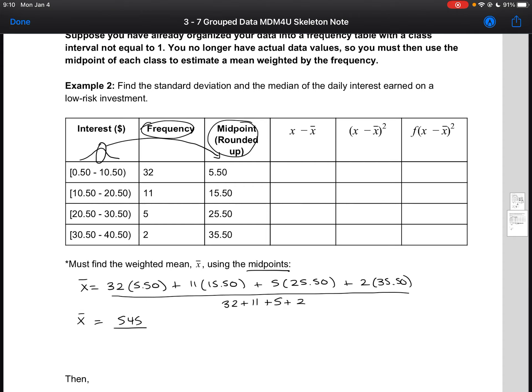So 32 plus 11 plus 5 plus 2. This is going to give us 545 over 50, which gives us a weighted average of 10.9, rounding to one decimal place. Double check on your calculator. Make sure that you are getting the same value for the weighted mean.